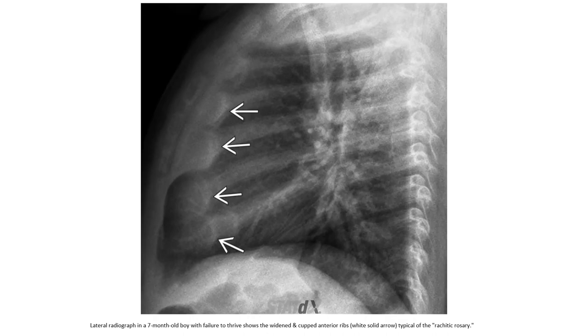Lateral chest radiograph in a seven-month-old boy with failure to thrive shows widened, cupped, and frayed ribs — the rachitic rosary.